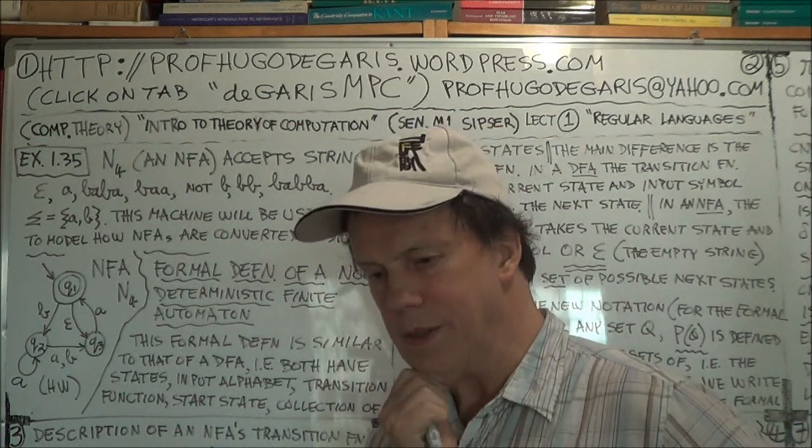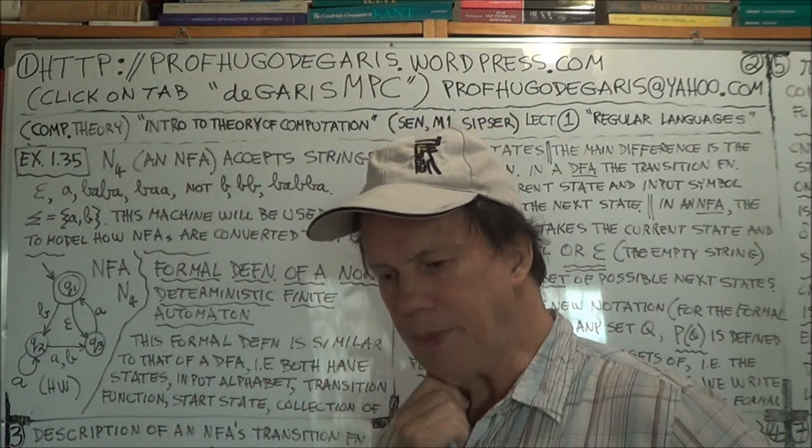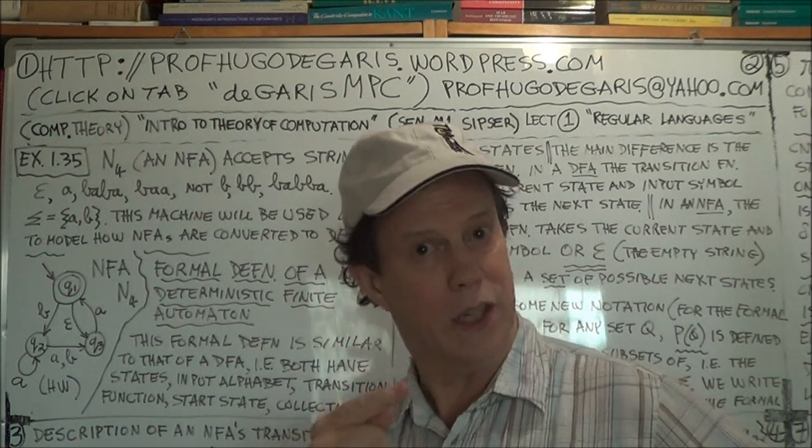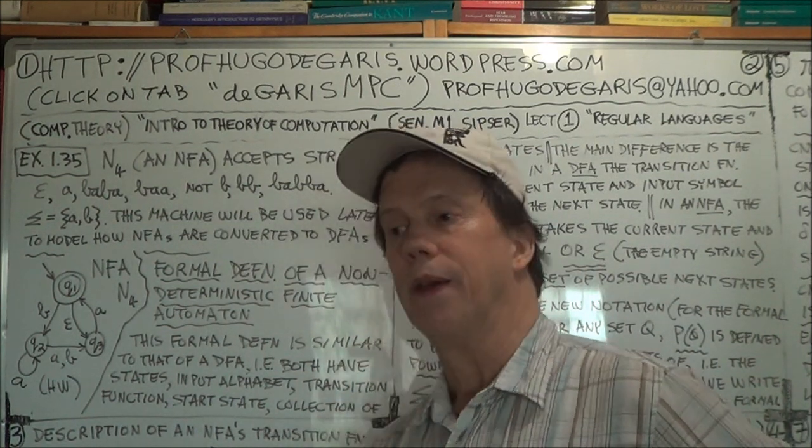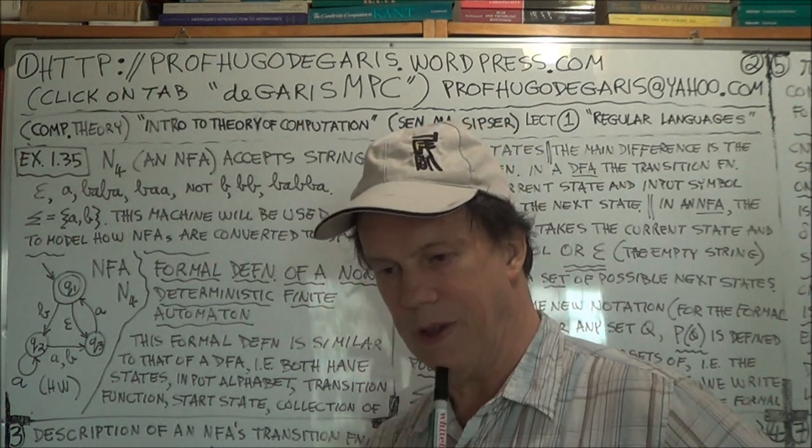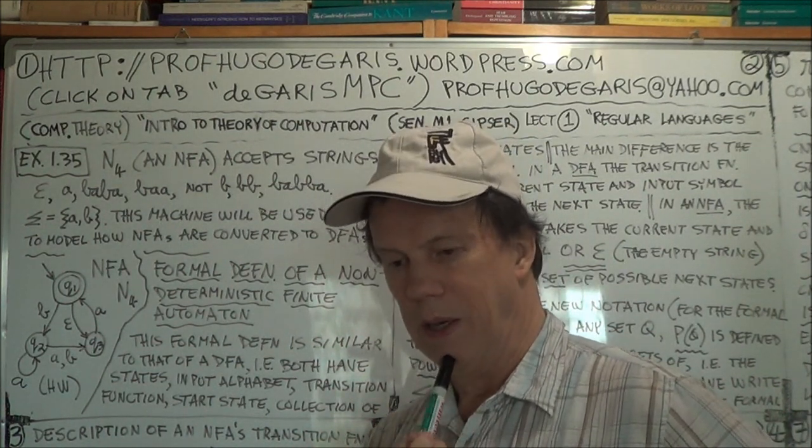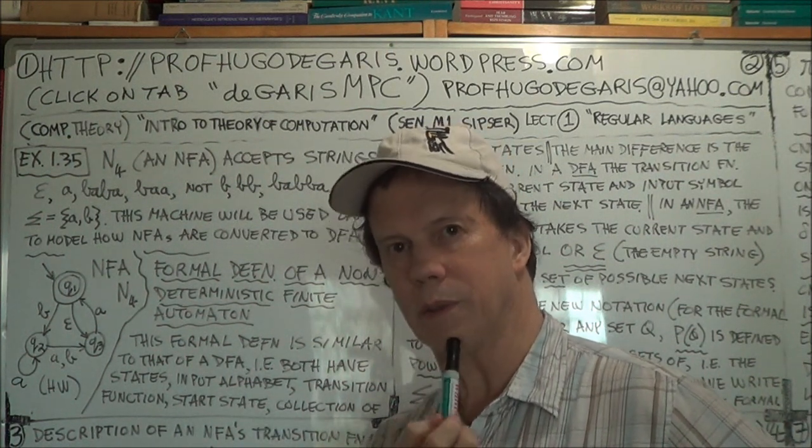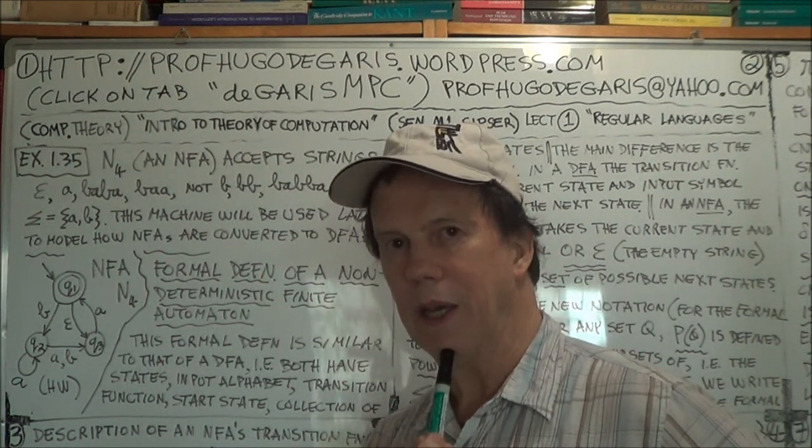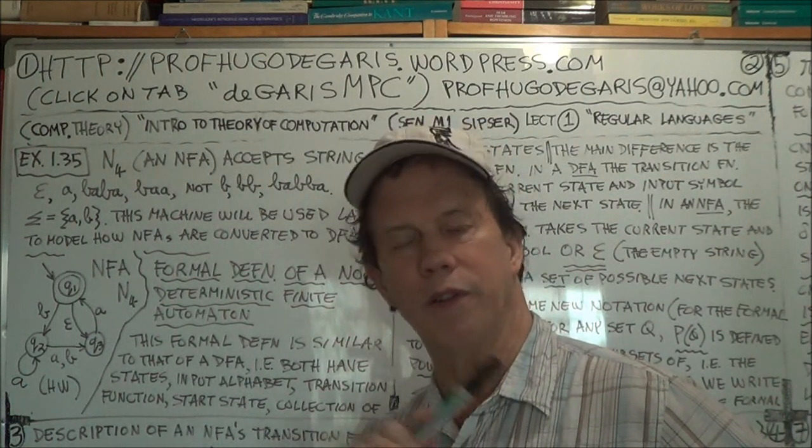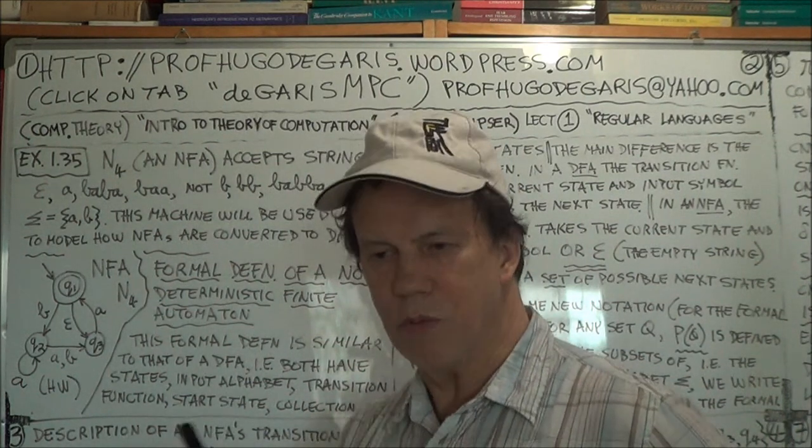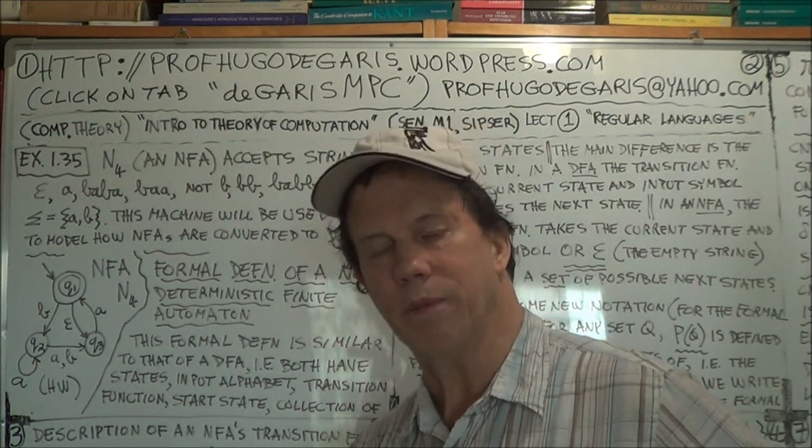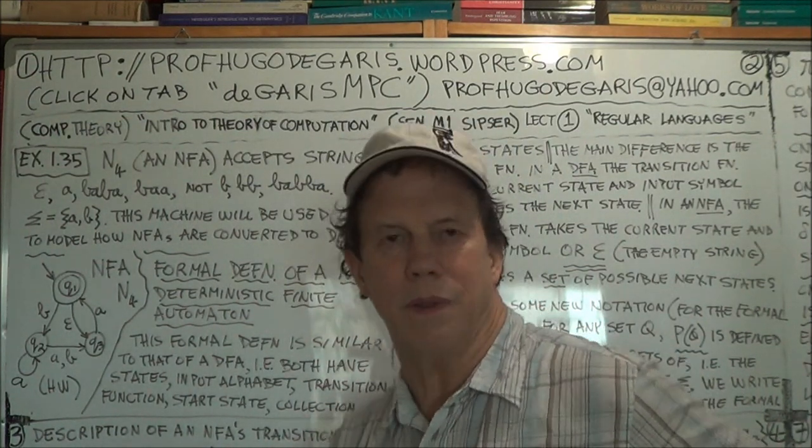Now I've mentioned on the previous board I think, that there's a theorem, and we'll actually start it in this board. There's a theorem which says that any NFA, any non-deterministic finite automaton, has an equivalent DFA. Equivalent just means the two machines recognize the same language, in other words they do the same job, they're equivalent in that sense.